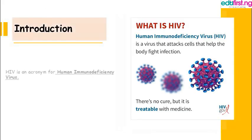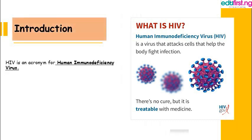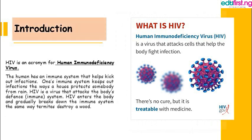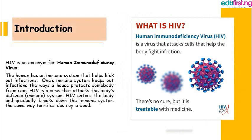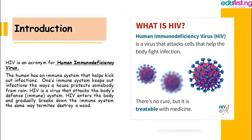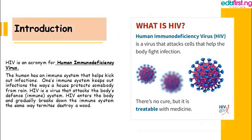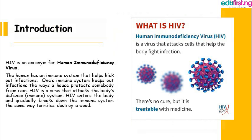What is HIV? HIV is an acronym for Human Immunodeficiency Virus. The human body has an immune system that helps kick out infections. One's immune system keeps out infections the way a house protects somebody from the rain. Imagine being in a house when it's raining — your house protects you from the rain, and that is exactly what your immune system does.